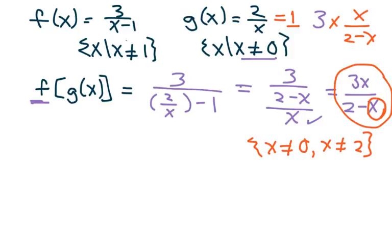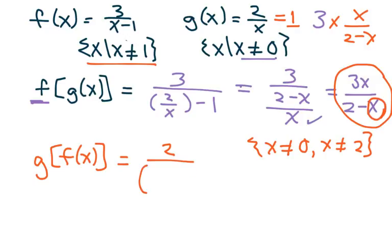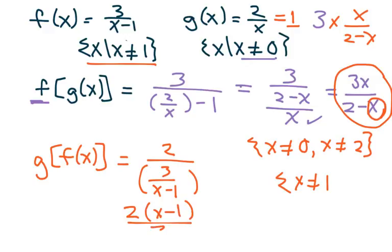For g composed of f of x, we're looking at the domain for f, and write down g: 2 over x, with 3 over (x minus 1) substituted in. This clearly shows x cannot be 1. Simplifying, we get 2(x minus 1) over 3. So we just can't let x be 1.